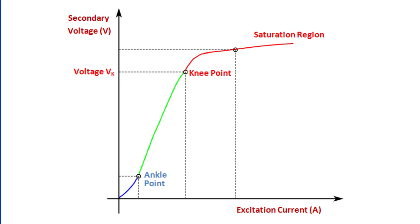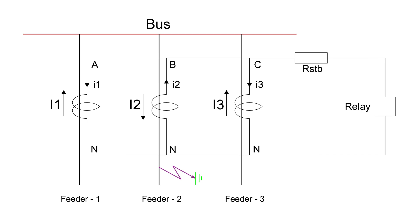The worst condition occurs when a CT gets completely saturated. Therefore, we need a way to make the relay insensitive to through faults, which is where the stabilizing resistor comes into play.